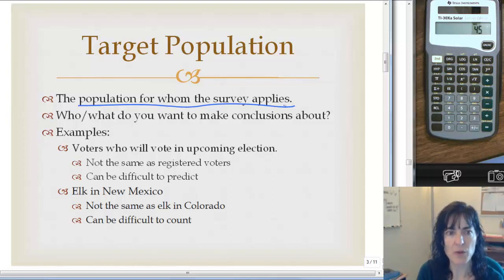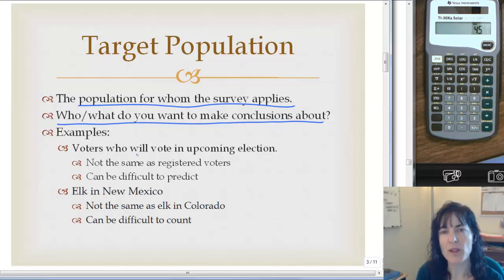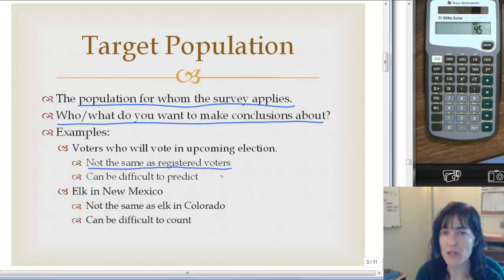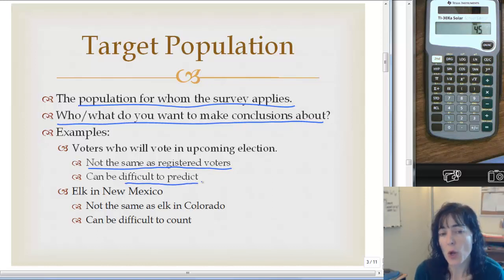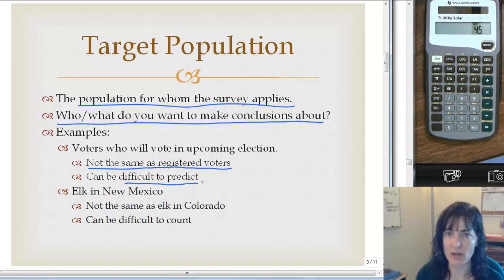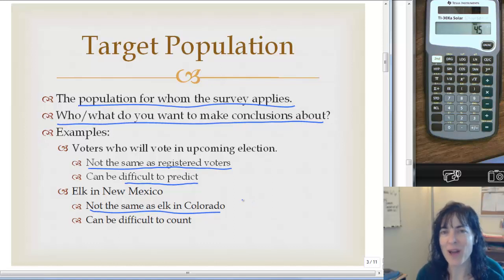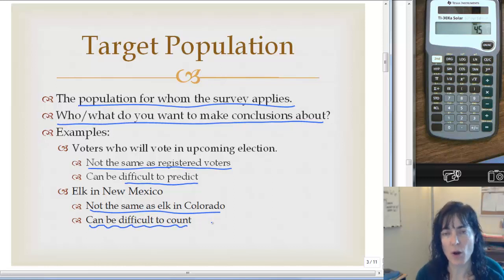The target population is who or what you want to make conclusions about. My examples were voters who will vote in the upcoming election — and you need to understand that is not the same as registered voters, because not all registered voters actually go to vote, and it can be difficult to predict who belongs to it. The elk in New Mexico is another example — not the elk in Colorado or Montana. It can also be difficult to count how many elk we have.